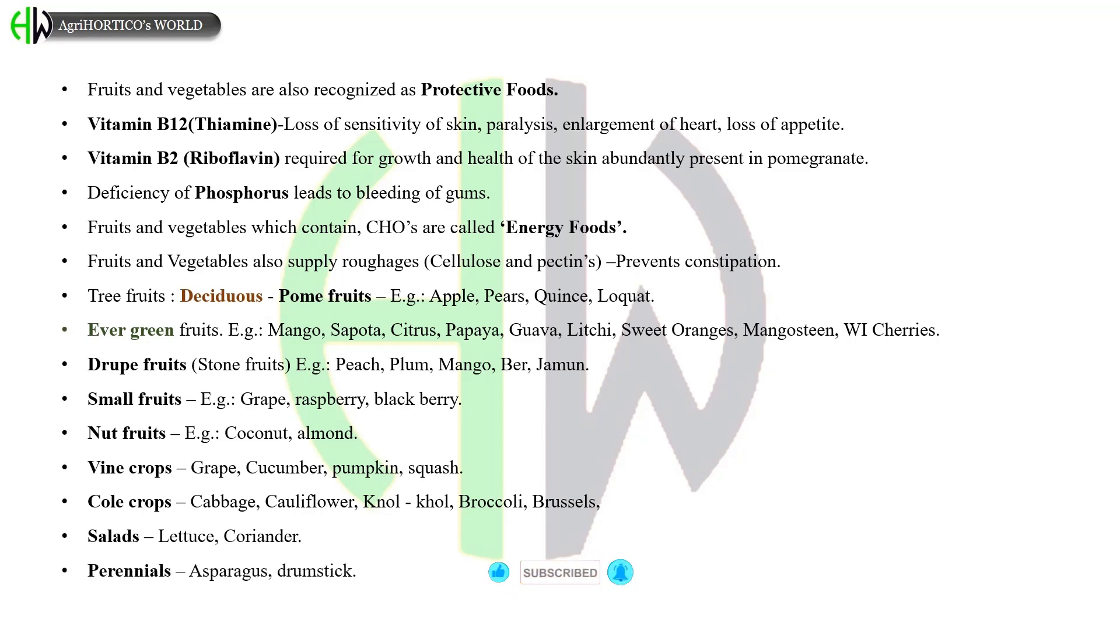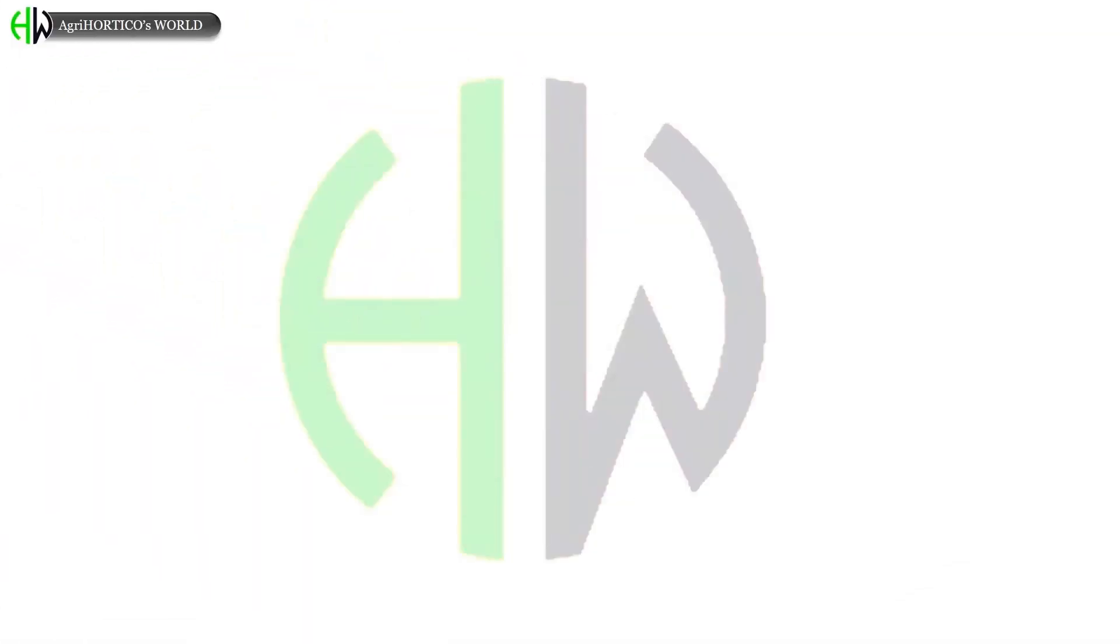Examples for perennials are asparagus, drumstick. Green veggies are spinach, palak. What is arboriculture? Raising of perennial trees for shade or avenue is called arboriculture. Examples are eucalyptus, casuarina. Fruit technology is processing and preservation of fruits.